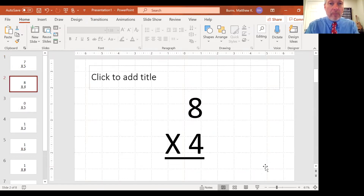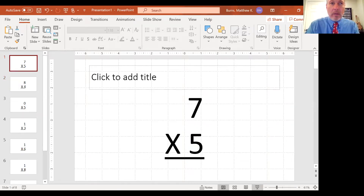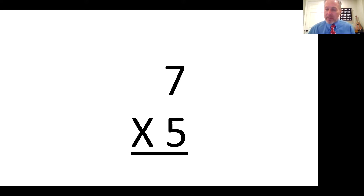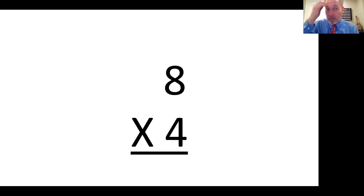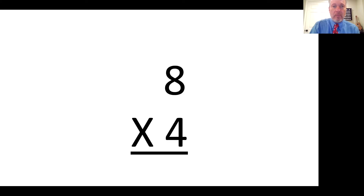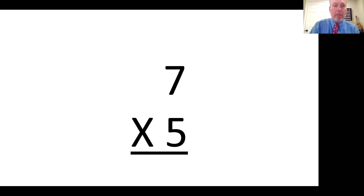Remember this one, Emma? 8 times 4. 8 times 4 is 32. Very good. Okay, let's do the next one. 35. Okay, good — 7 times 5 is 35. You must have skip-counted while I left it up there for a second. 7 times 5 is 35. Say the whole thing, please. 7 times 5 is 35. Good job. This one? Say the whole thing. 8 times 4 is 32. Good. This one? 7 times 5 is 35. Good. This one? 8 times 4 is 32. Good. How about that one? 0. Good, this one? 8 times — 7 times 5 is 35.